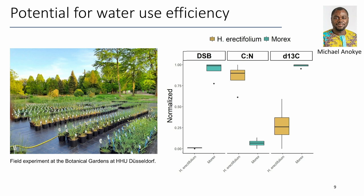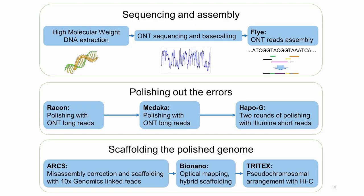For the assembly process: I extracted high-molecular-weight DNA and sequenced with Nanopore technologies to obtain long reads spanning repetitive sequences. After initial assembly, I performed multiple polishing rounds using long reads mapped to the genome to remove errors, then used highly accurate Illumina reads to polish remaining small indels and SNPs. I did incremental scaffolding using 10x Genomics linked reads, then Bionano mapping, and finally Hi-C to obtain the final pseudochromosomal arrangement.